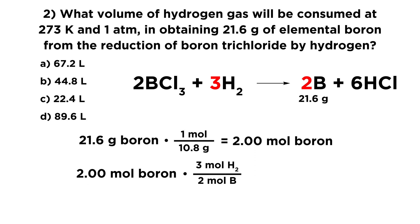2 moles of boron times 3 moles of hydrogen over 2 moles of boron, that means we need 3 moles of hydrogen in order to get those 2 moles of boron that correspond to the mass of boron we're trying to get.